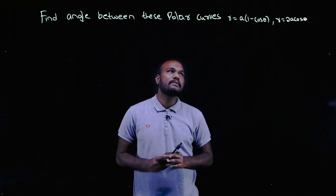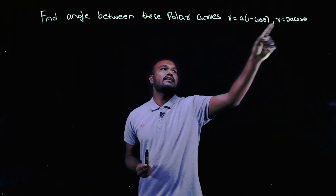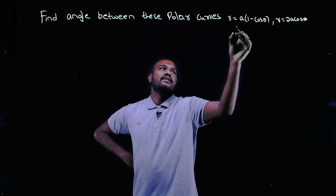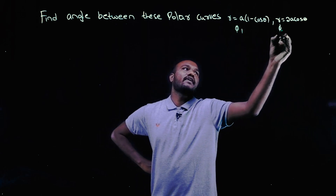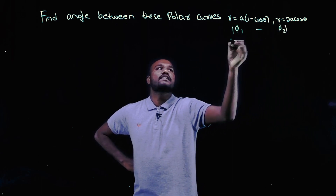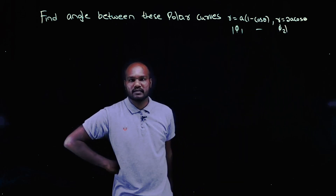We have to find the angle between this curve and this curve. So how to do that? We have to find φ₁, we have to find φ₂, then compute φ₂ minus φ₁, or φ₁ minus φ₂ — either is fine.